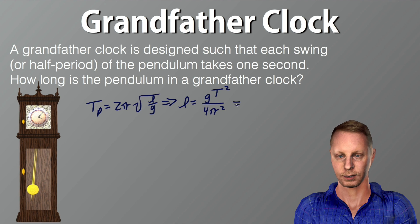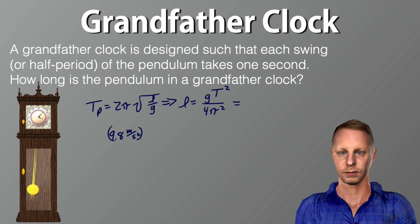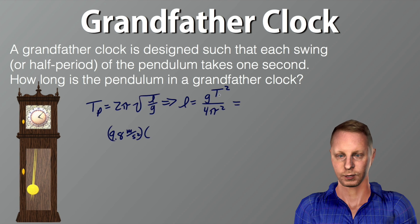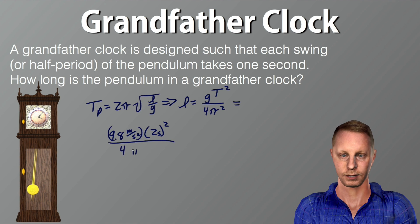We can then substitute in our variables g, about 9.8 meters per second squared, here on the surface of the earth. Our total period, 2 seconds, if a half period is 1 second squared, divided by 4π squared, comes out to be mighty close to 1 meter, which is why pendulum clocks tend to be so tall.